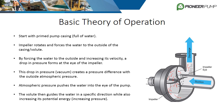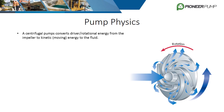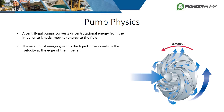The volute then guides the water in a specific direction while slowing it down, which increases its pressure or potential energy. Most, if not all, of the interesting physics happen with the impeller and volute and how they work together. The pump ultimately converts rotational energy from the impeller to kinetic or moving energy to the fluid. The amount of energy imparted to the liquid directly corresponds to the velocity at the edge of the impeller. The volute slows the fluid down and converts the velocity to pressure energy in the most efficient way possible.